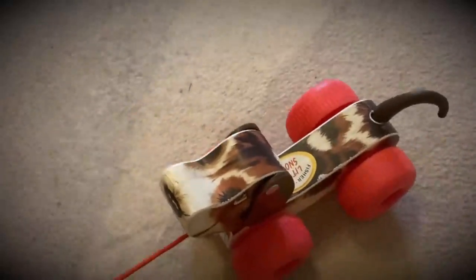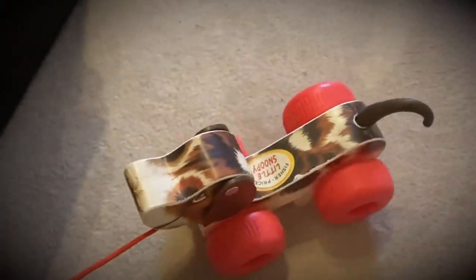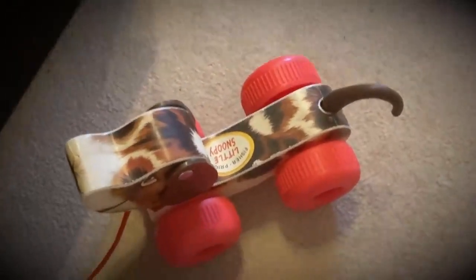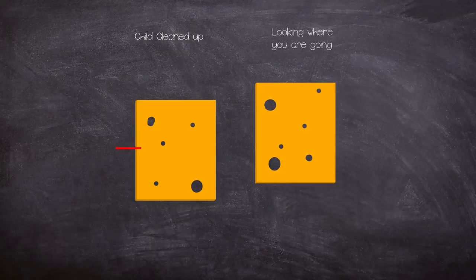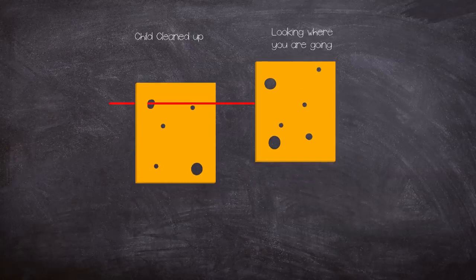This could have been prevented in a number of ways, say telling your two-year-old to put their toys away after playing with them or looking where you're going. In the Swiss cheese model, either of these potential blockers for your painful fall would have averted disaster.